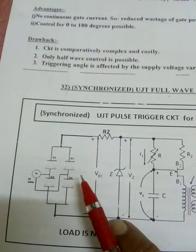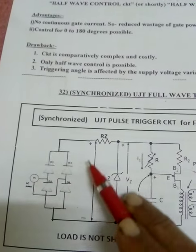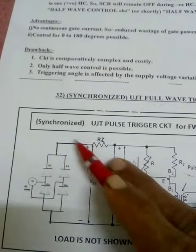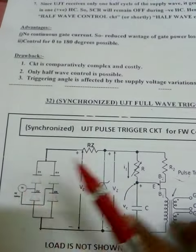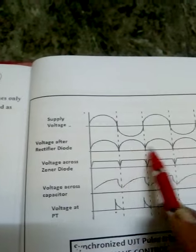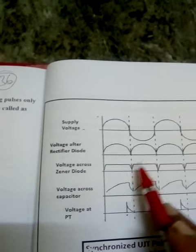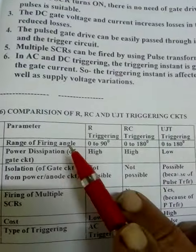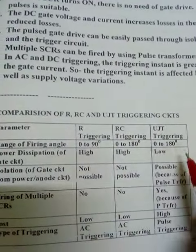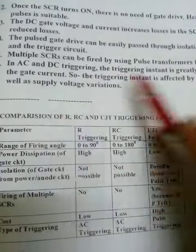I'm not sure whether it's in the syllabus — kindly check. For the full-wave UJT circuit, a full rectifier will be added here so that you will get both half cycles. Everything else is similar. A comparison of different firing circuits is also provided, which is very simple to understand.